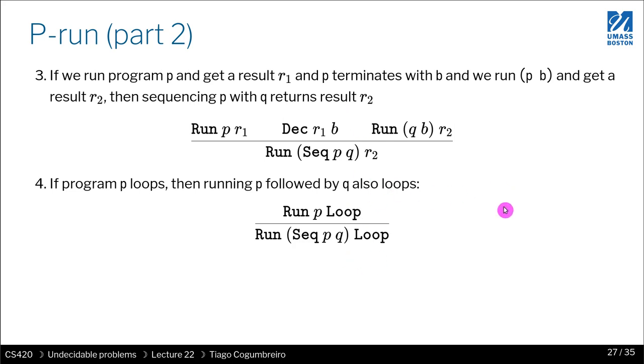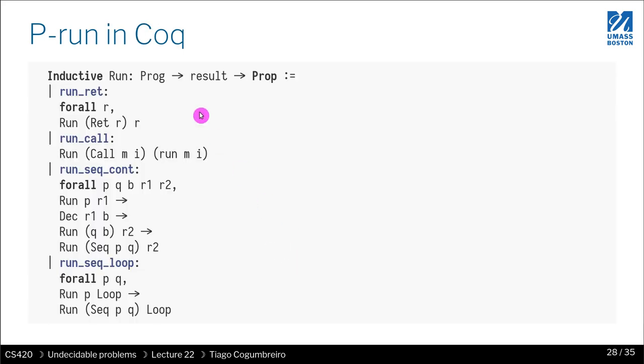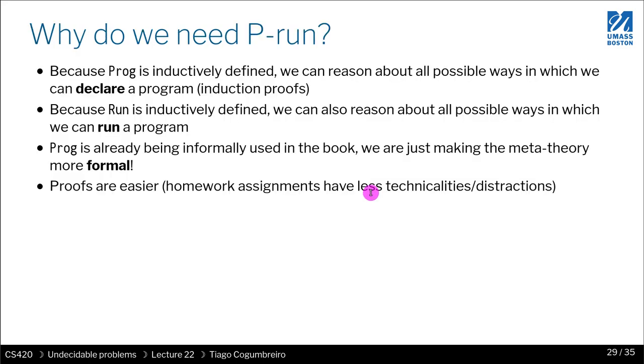What is the other thing that could happen? The other thing is that P loops. If P loops, the whole thing loops and Q never runs. It's a very simple rule. We have two of these rules. The homework assignment will ask you to either construct elements of type run or simplify things in your assumptions that are type run, and prove something using that knowledge.